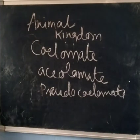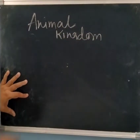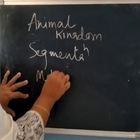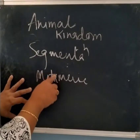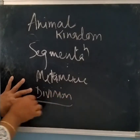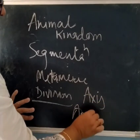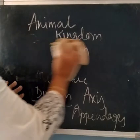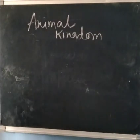The next criterion is segmentation — what kind of segmentation do they have. As you have studied in earthworm, it has metameric segmentation, where the body is divided into many compartments called metameres. Body division also includes an axial part and appendages. In cockroach too, you can see the abdomen part is segmented.